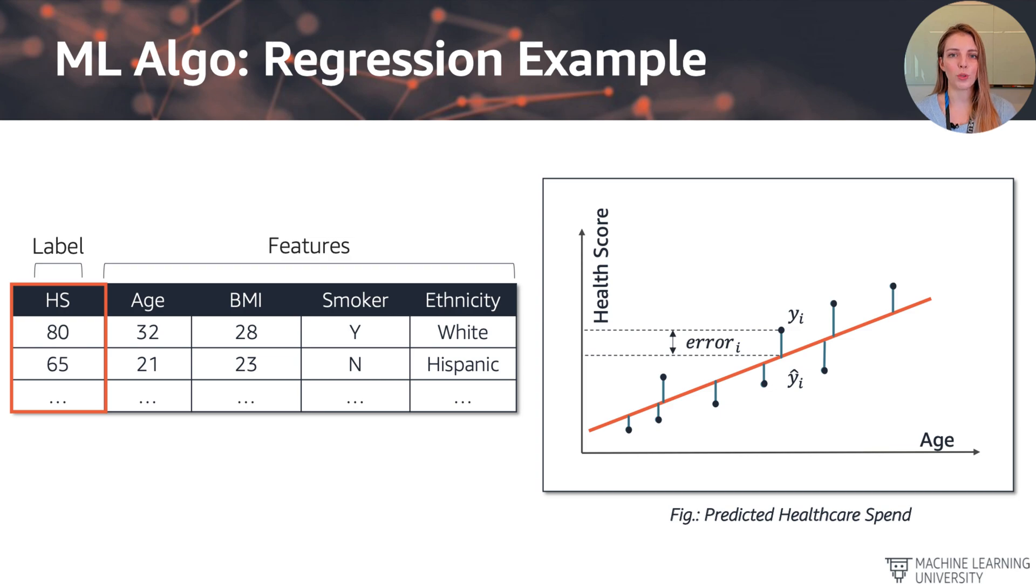We can see that not all the data points are perfectly on the line. That's not possible. We have an error between the prediction, which is the line, and the true underlying data points. So every single data point will have an error associated to it. You can see here error subscript i, referring to the individual errors per data point.